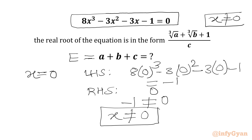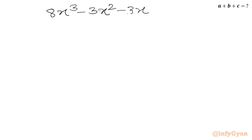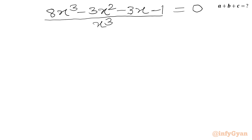Since x cannot be 0, I can divide our equation by x, x², or any power of x. So let me write our equation: 8x³ - 3x² - 3x - 1 = 0. Now we will divide both sides by x³. Dividing term by term: 8x³/x³ = 8, and 3x²/x³ = 3/x.